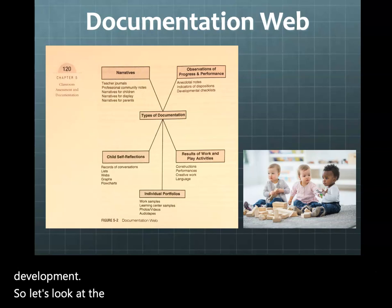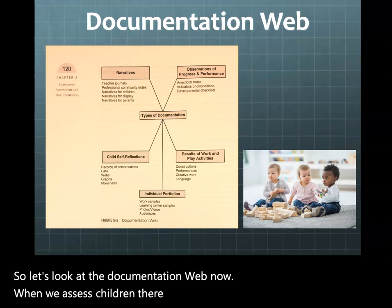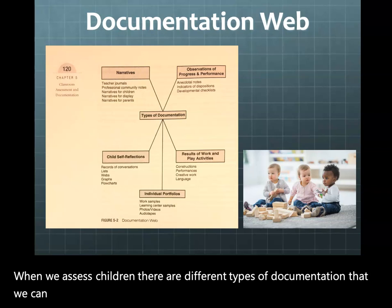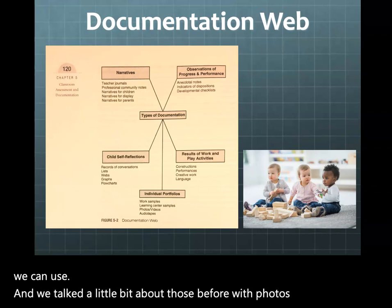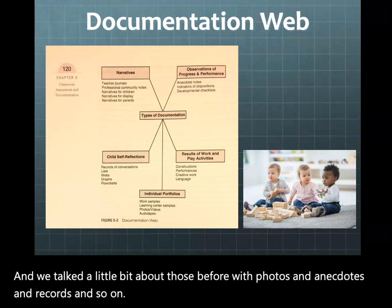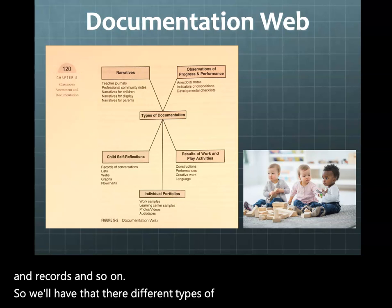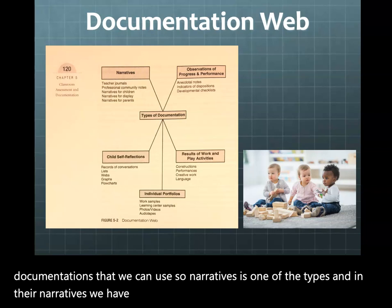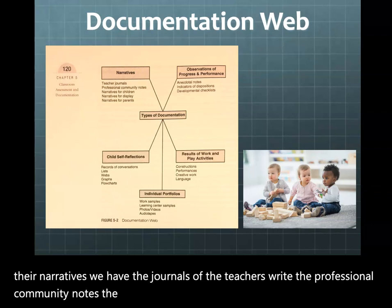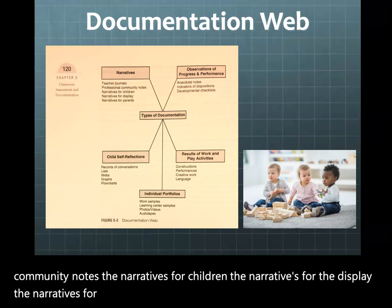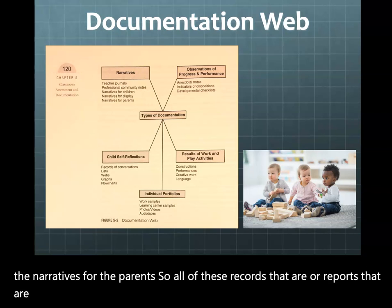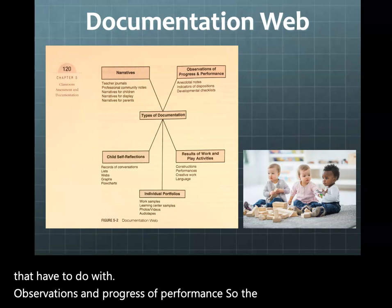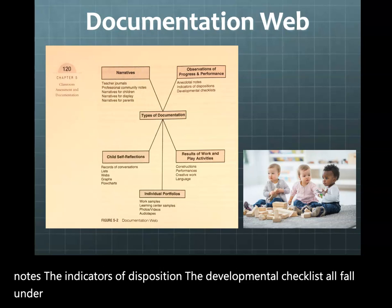Let's look at the documentation web. When we assess children, there are different types of documentation we can use — photos, anecdotes, records, and so on. Narratives is one type, including journals the teachers write, professional community notes, and narratives for children, display, and parents. Other types relate to observations and progress of performance: anecdotal records or notes, indicators of disposition, and developmental checklists all fall under this category.